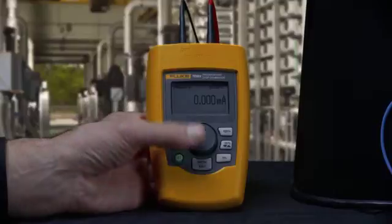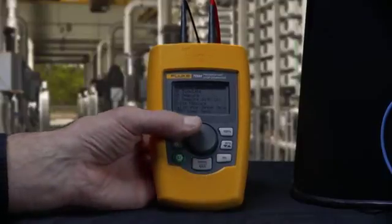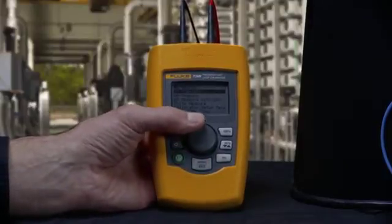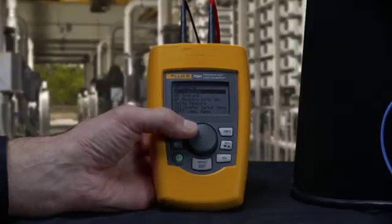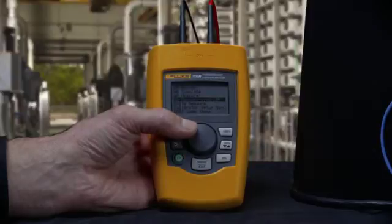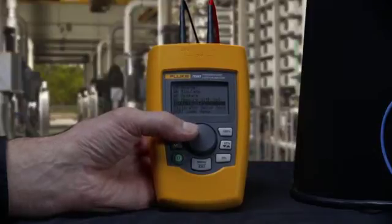Like any good loop calibrator, the 709 can source milliamps, simulate milliamps, measure milliamps, measure milliamp while providing 24 volt loop power, and measure DC voltage and loop power supplies.